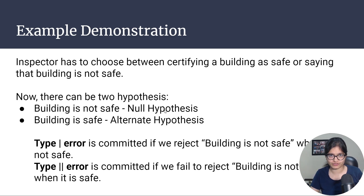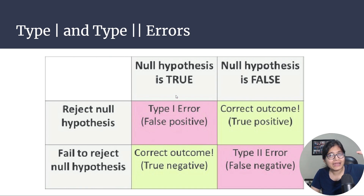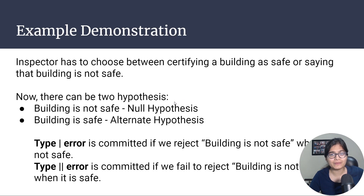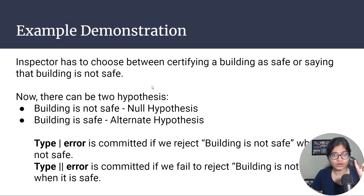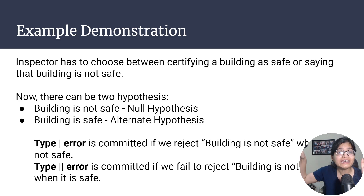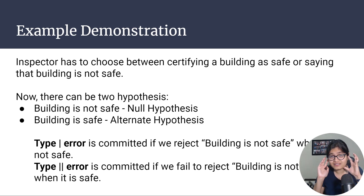Here is an example: an inspector has to choose between certifying a building as safe or saying the building is not safe. Let's say the null hypothesis H₀ is 'the building is not safe.' Type 1 error in this context means: null hypothesis is true but I reject it. So Type 1 error is committed if we reject the null hypothesis — 'building is not safe' — when actually it is not safe. That means I am rejecting the statement that the building is not safe, which implies I am saying the building is safe, when it is actually not safe.